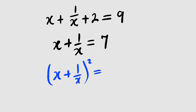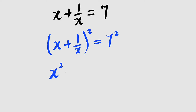Now let us take 2 to the right hand side. To the left hand side, we have only x plus 1 divided by x. And to the right hand side, we have 9 minus 2, which is equal to 7.